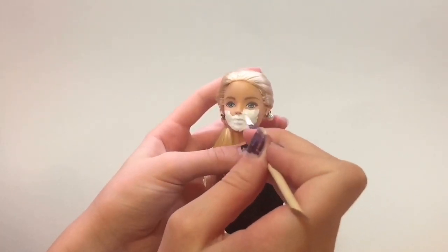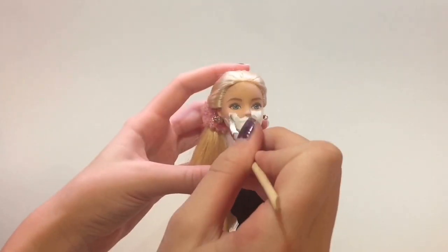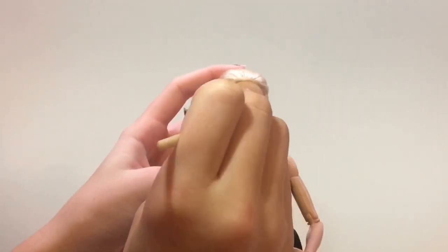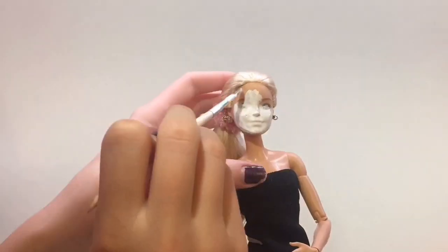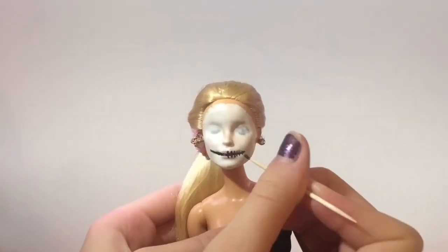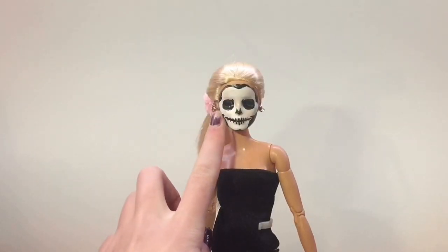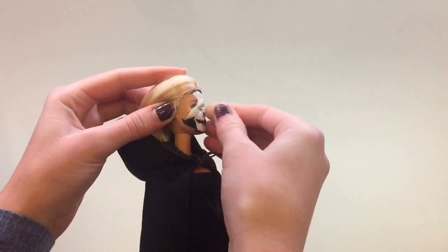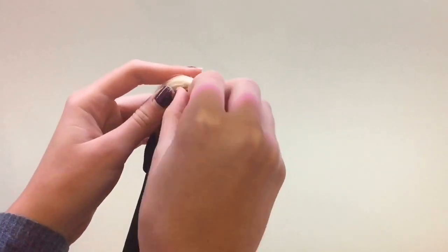I started by painting the doll's face in complete white acrylic paint and white glue mixture, and then I used black to make a whole bunch of skull-like details. When you're ready to take it off, it easily peels away.